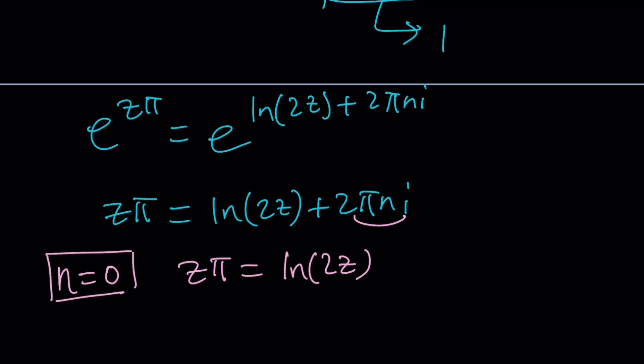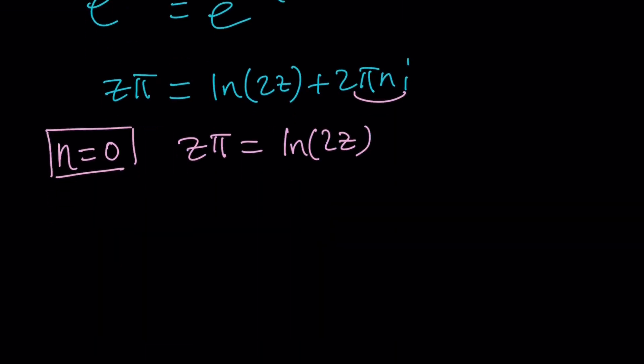Now at this point, I'm going to use my superpowers and put the z on the right-hand side. Of course, it's going to go to the right-hand side as 1 over z, which I can write as z to the power of negative 1, multiply by ln(2z), and that's going to equal π. Awesome.